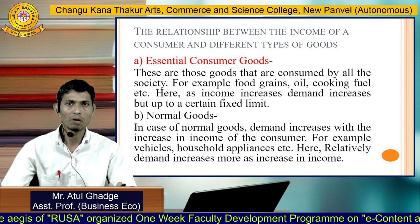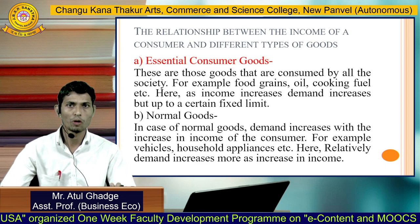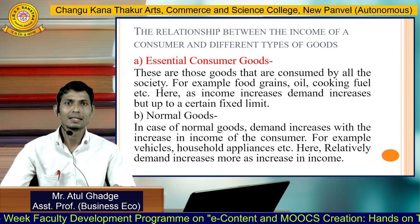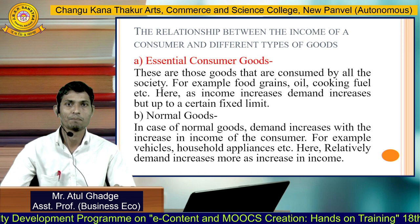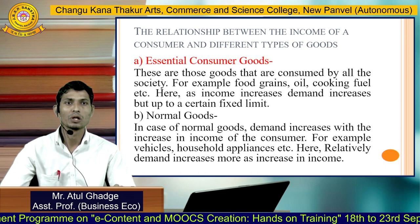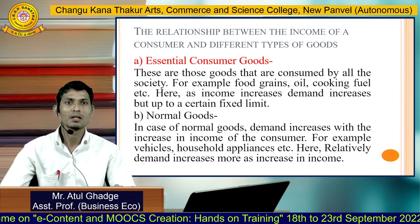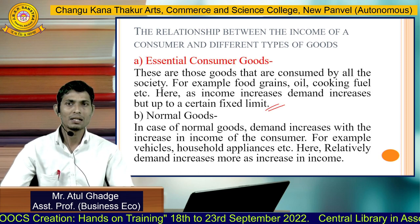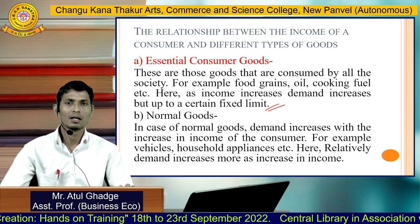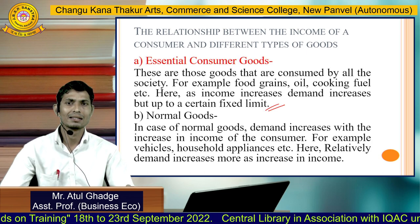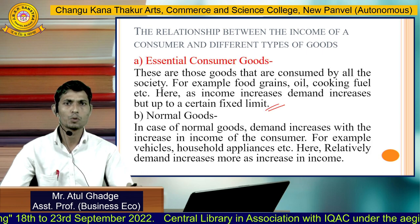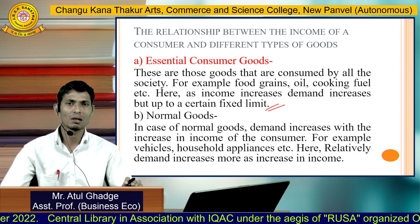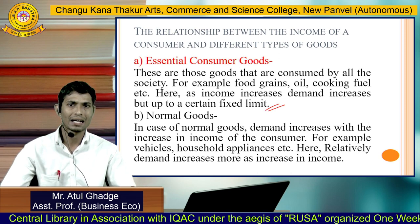This point is categorized into four sub-points. First is essential consumer goods — goods consumed by all of society, for example food grains, oil, cooking fuel, etc. Here, as income increases, demand increases but only up to a certain fixed limit. When your income increases beyond that, their consumption neither increases nor decreases much, so income has no great impact on quantity demanded for essential goods.